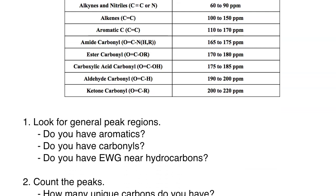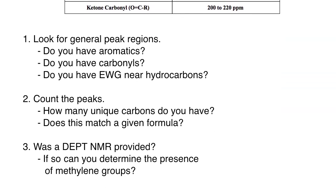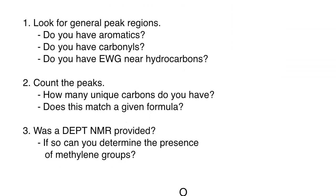So how would you go about starting to assess a carbon-13 that's laid in front of you? This is the general process that I take. Look for general peak regions, which is what we just discussed. You should take the carbon-13 NMR and as you're looking at it, make general discoveries that you can classify. Do you have aromatics? You should be able to very easily scan the region of 110 to 170 and see if you have peaks there. If you do, you should mark down that you likely have aromatics.